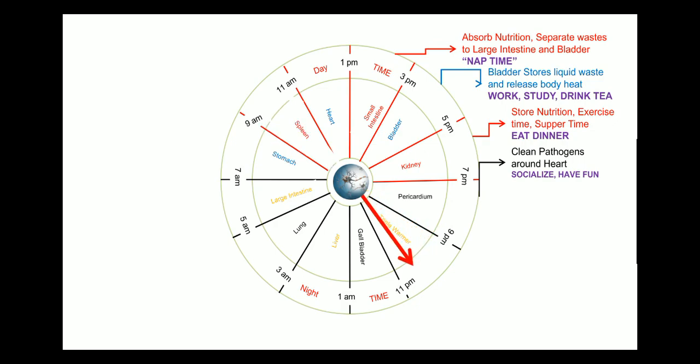Between 9 pm to 11 pm is known as the triple warmer period. This is considered a rest time. The immune system is strong and works better during this period. You should chill out and relax, or if you are a student, you can involve yourself in reading.